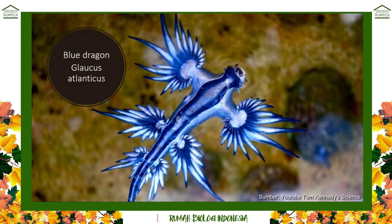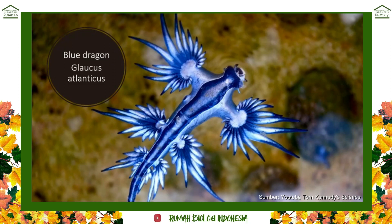Some snails have lost their shells, and these are called the nudibranchs — 'nudie' meaning nude or naked, 'branch' meaning gills: these are naked gills. A lot of nudibranchs are incredibly beautiful and brightly colored, and that is a warning coloration called aposematic coloration. It signals: look at me, look how brightly colored I am — don't mess with me, I'm poisonous.